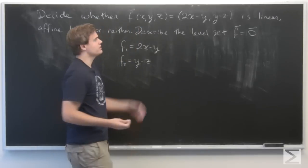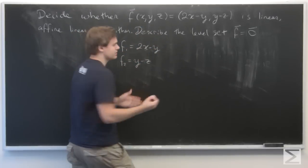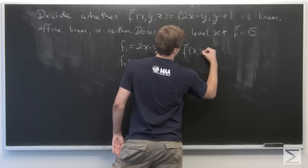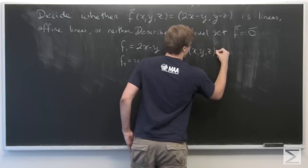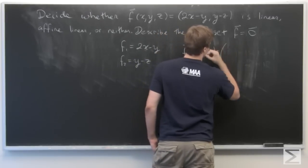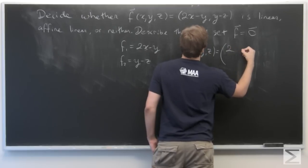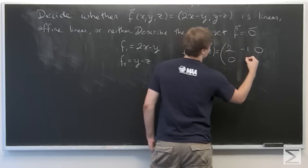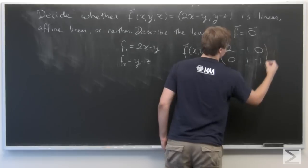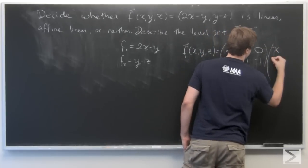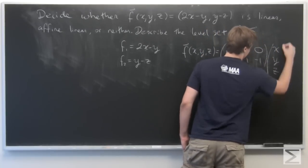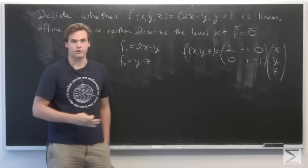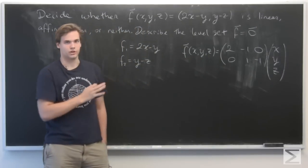Also, if you've seen some linear algebra, you can see that f itself is given by a matrix such that f of x, y, z is, let's see, 2 minus 1, 0, 0, 1, minus 1, applied to x, y, z. But you don't need that. It's just convenient terminology, and it shows right away that the function f is linear.